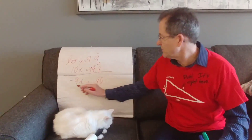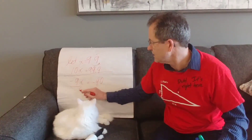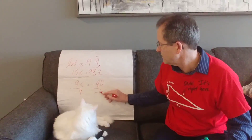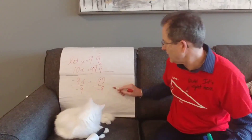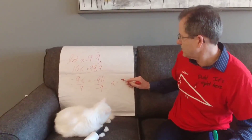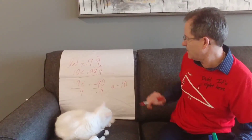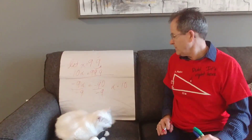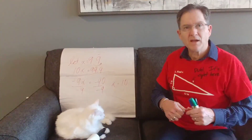If I divide both sides by 9 to solve for x, I get x equals exactly 10. So my friend's older brother was right.